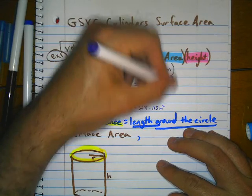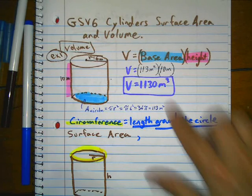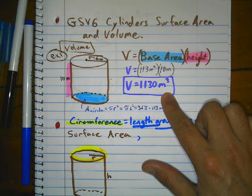So the volume is equal to 1130 meters cubed. Whenever you're doing volumes, your units are going to be cubed.